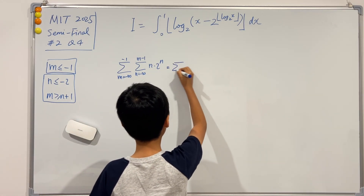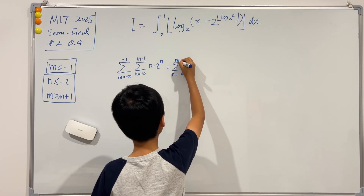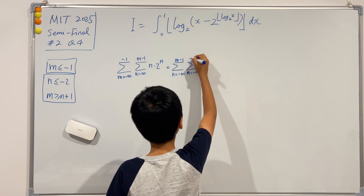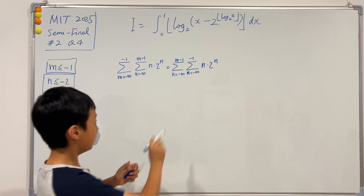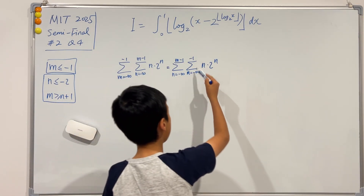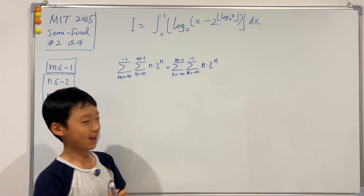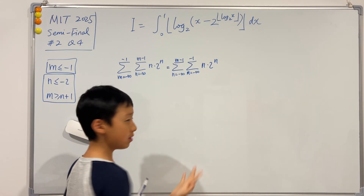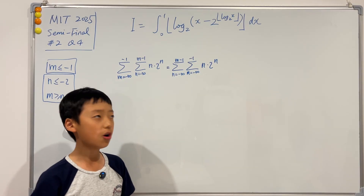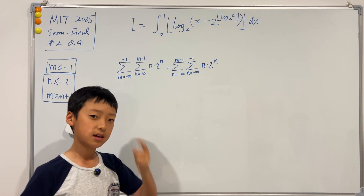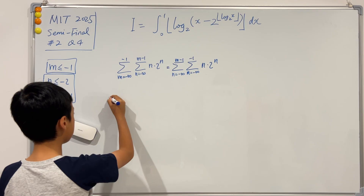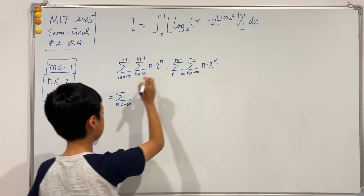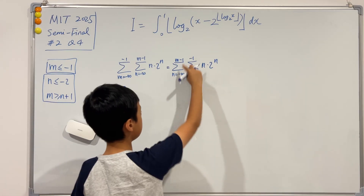After swapping, the expression is: the sum over n from negative infinity to negative 2, of n times the sigma over m from n plus 1 to negative 1. Now the inner sum has no m dependence, so it's just a matter of counting. The number of terms between n plus 1 and negative 1 is negative 1 minus n. So we multiply by negative 1 times n, giving us the first sum.